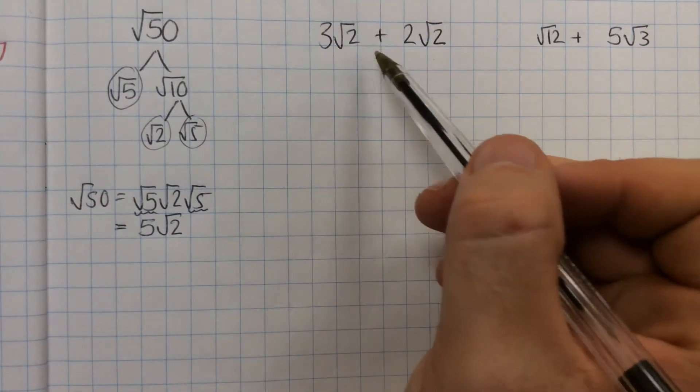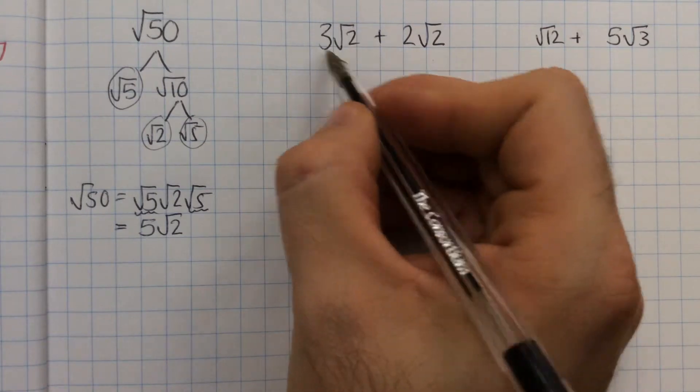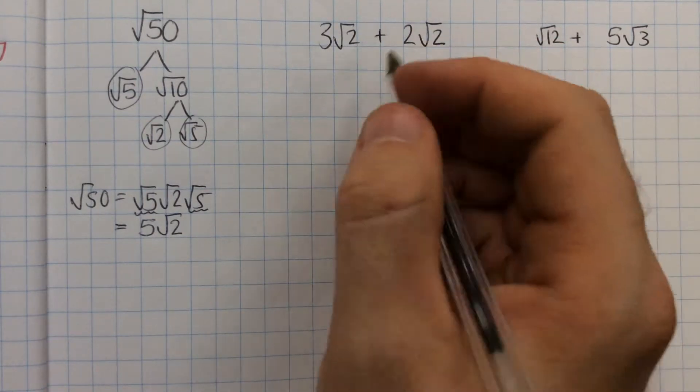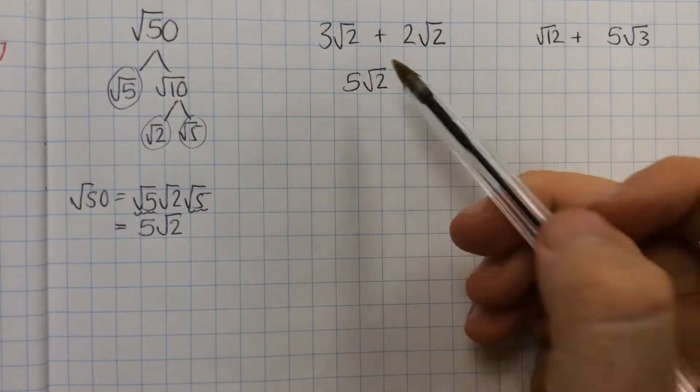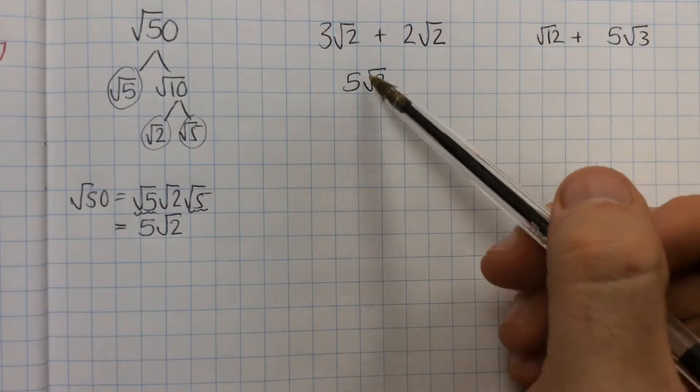Very simple one. Next, just to remind you that if you have some lot of root 2 plus another amount of root 2's, they work in the same way as x's would, so 5 root 2 would be your answer there. 3 lots of it plus 2 more lots of it would make 5 lots of it.